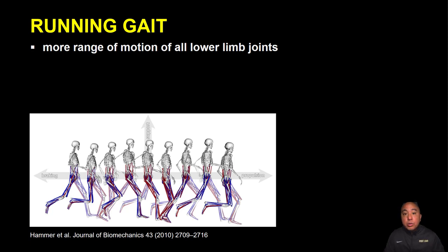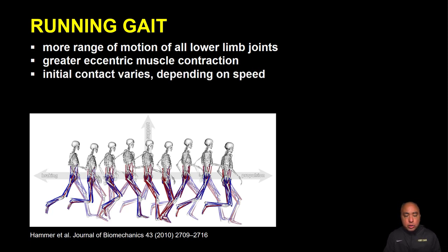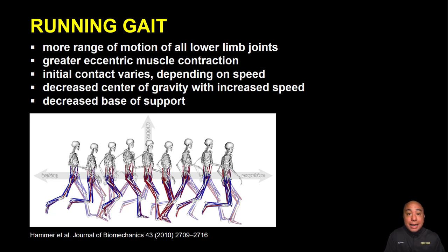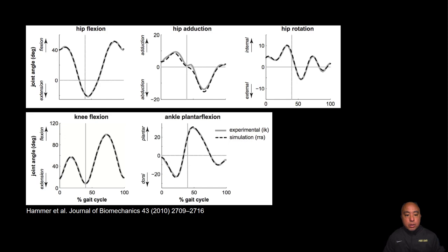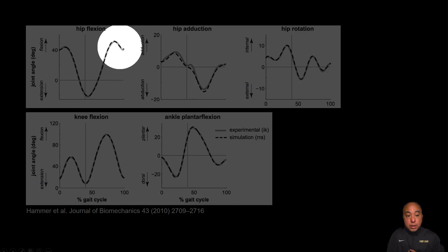From a kinematic and temporal perspective during running, there are increased ranges of motion at the hip, knee, and ankle joints, and the muscles around these joints typically have greater eccentric contraction — muscle contraction while lengthening. Foot strike at initial contact varies depending on speed. The vertical displacement of the center of gravity decreases with increased speed, and because the runner is always on one leg at a time, there is a decreased base of support.